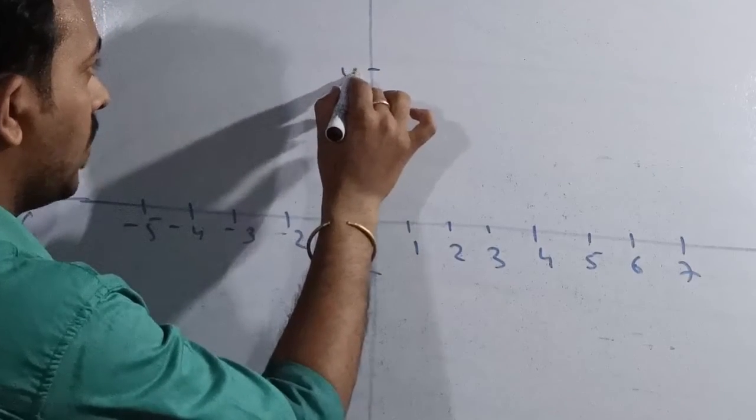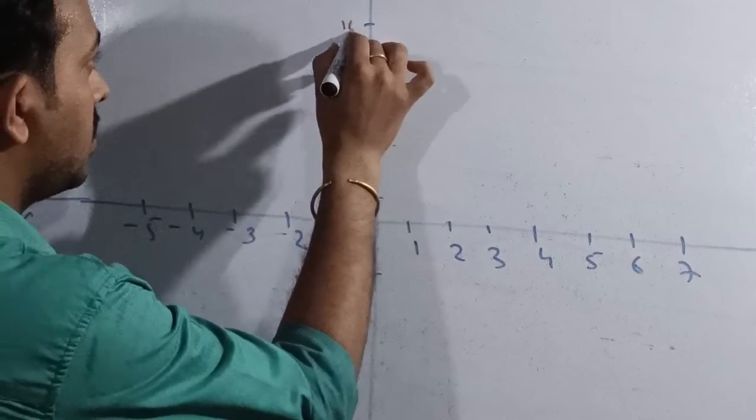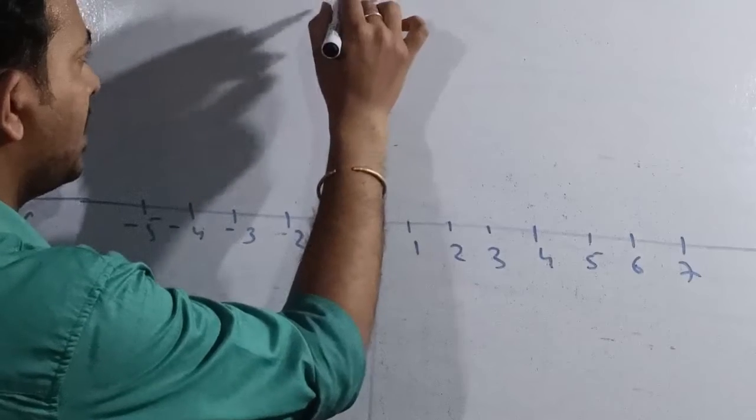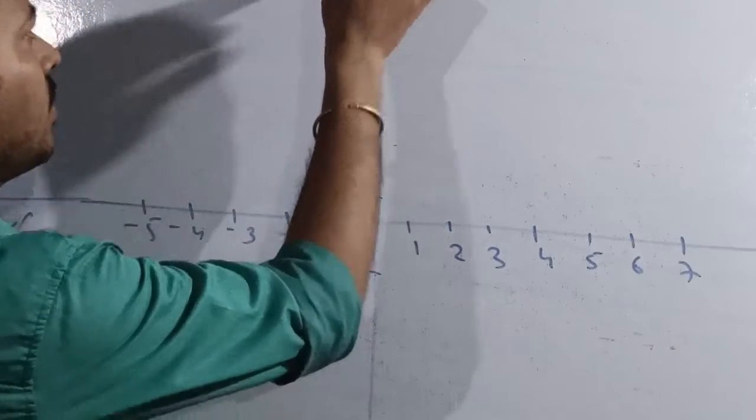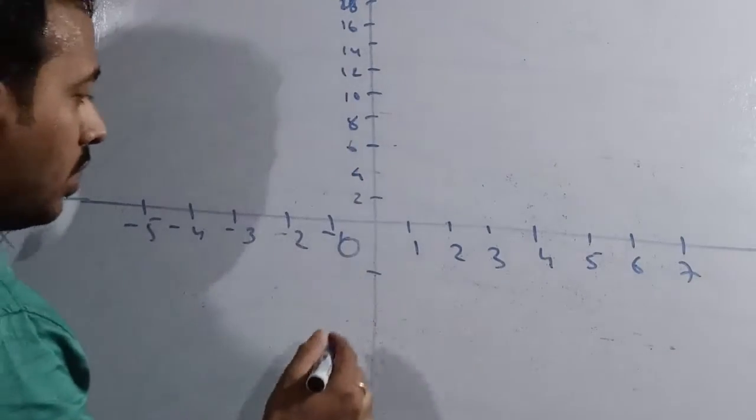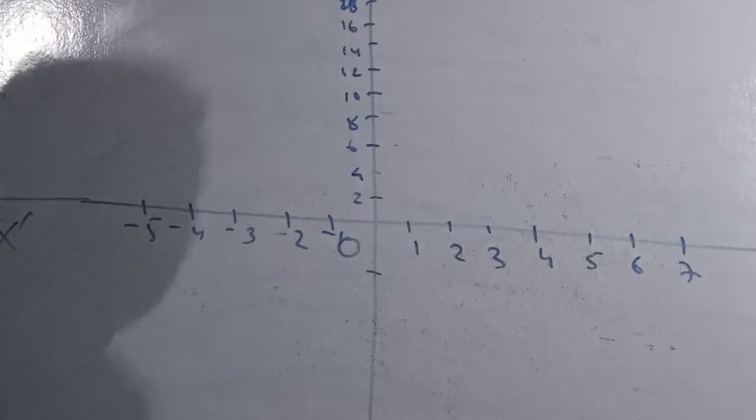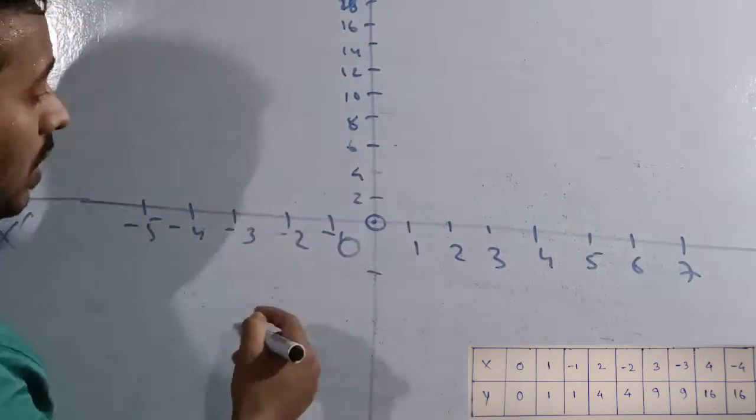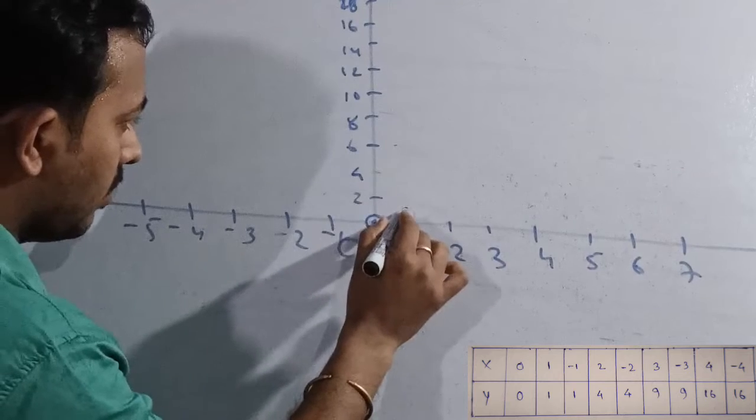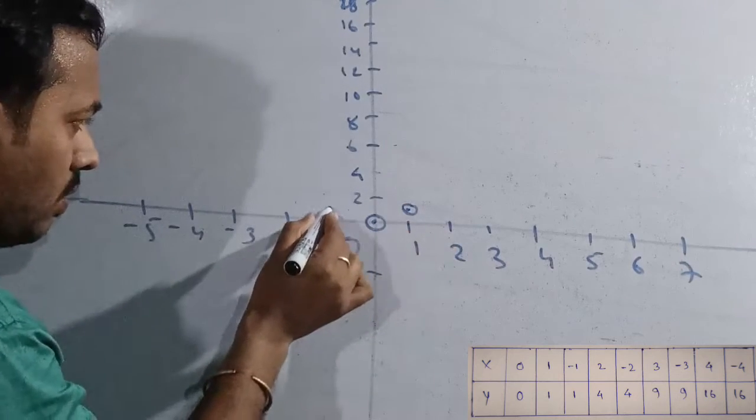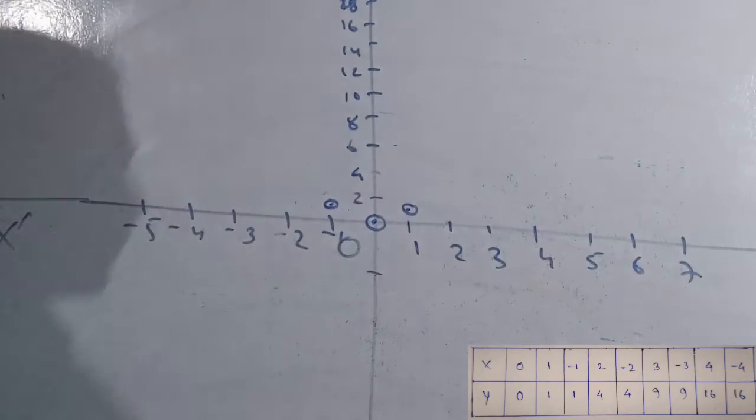Six, eight, ten, twelve, fourteen, sixteen, eighteen, and then twenty. Now look at zero zero, so this is our coordinate zero zero. Next is one one, so one and one will be in the middle here. And minus one one would be here somewhere.